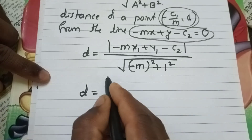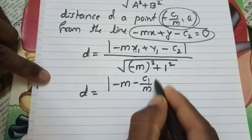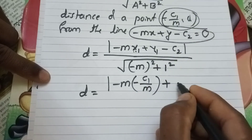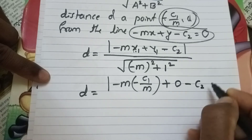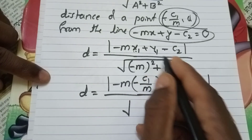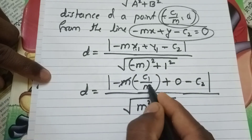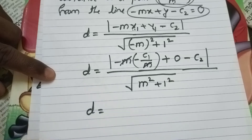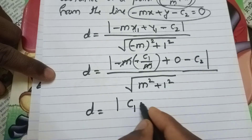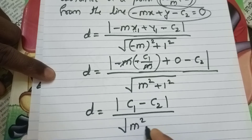So d = |(-m)·(-c1/m) + (1)·(0) - c2| divided by √((-m)² + 1²). The coefficient of x is -m, so (-m)² gives m². Substituting x1 = -c1/m and y1 = 0: the (-m) and (-c1/m) cancel to give c1. Thus d = |c1 - c2| / √(m² + 1).